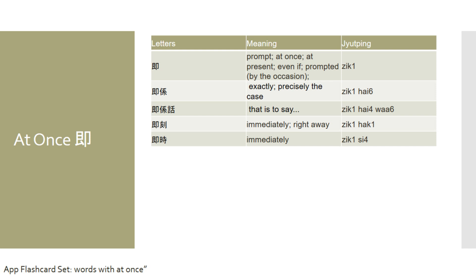If you want to say 'immediately' in Cantonese, you would say 直喊, which means immediately. There is also another Chinese word with pretty much the same meaning that we use interchangeably — instead of 直喊, we sometimes say 直喊, and that also means immediately. If you wish to review this set of words in our app, please refer to the flashcard deck named 'Words With At Once.'